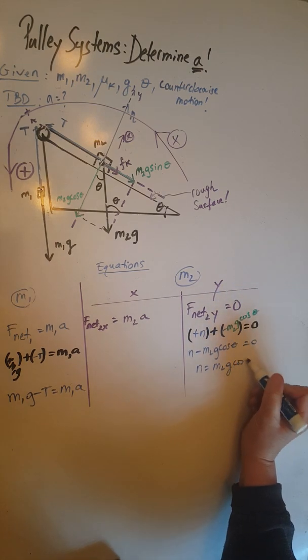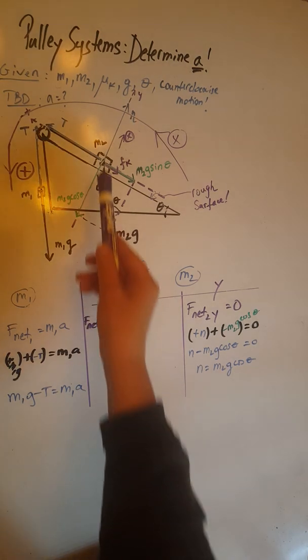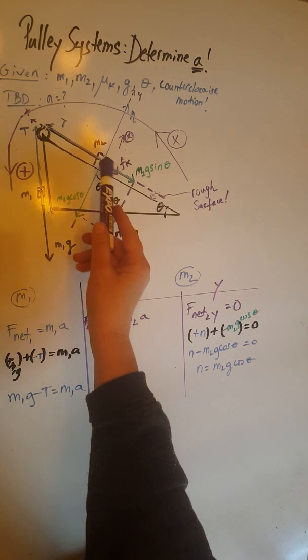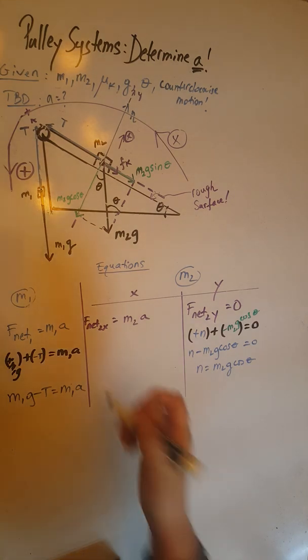Coming back to the F net x equation for object m2, we have three forces: one, two, and three. So we are going to have three forces whose vector sum must be equal to m2a.